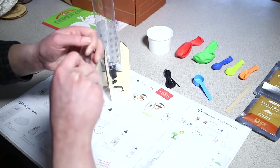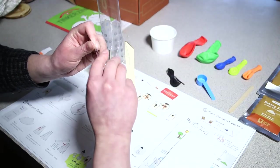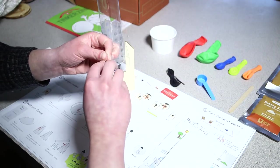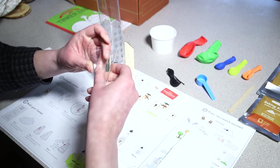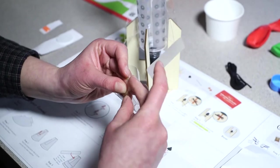Step number one: punch out the funnel piece from the clear sheet. Step number two: roll the funnel piece into a cone and slot the sides together. Step number three: secure with two clear stickers.